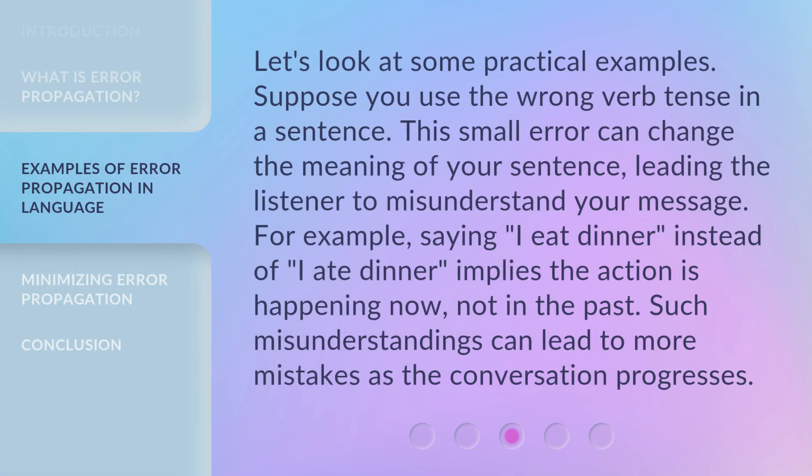Let's look at some practical examples. Suppose you use the wrong verb tense in a sentence. This small error can change the meaning of your sentence, leading the listener to misunderstand your message. For example, saying "I eat dinner" instead of "I ate dinner" implies the action is happening now, not in the past.